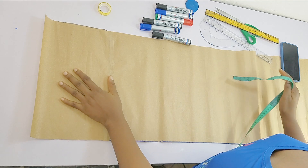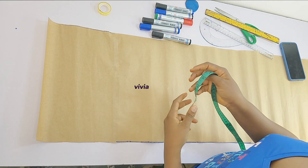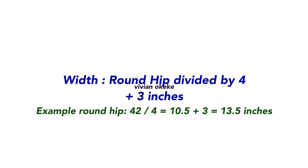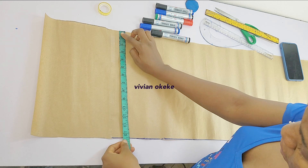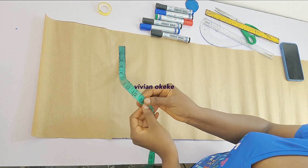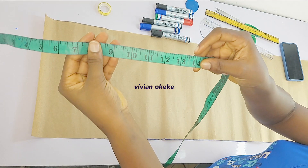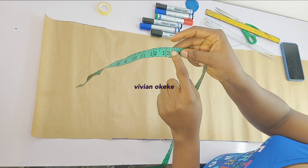We are now on the pattern drafting. I'll show you the width I'm working with for my pattern paper. The width of my pattern paper is: round hip divided by 4, plus 3 inches. My round hip divided by 4 gives 10.5, plus 3 inches gives 13.5 inches — and that is the width of my pattern paper.